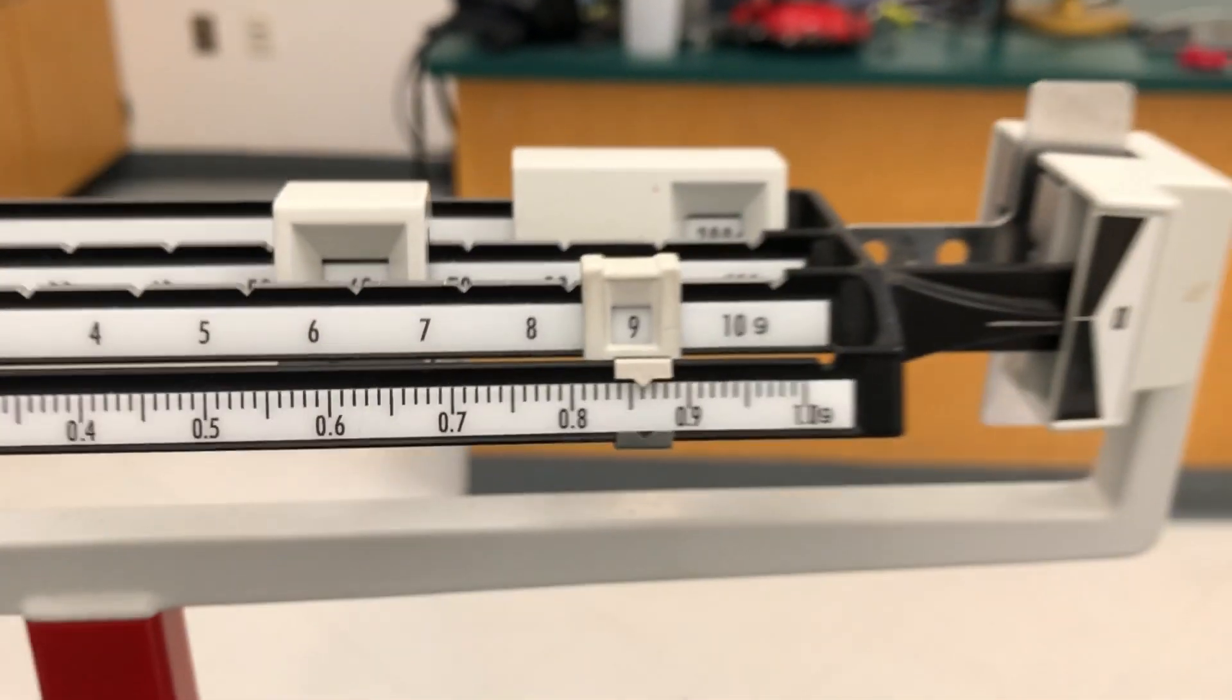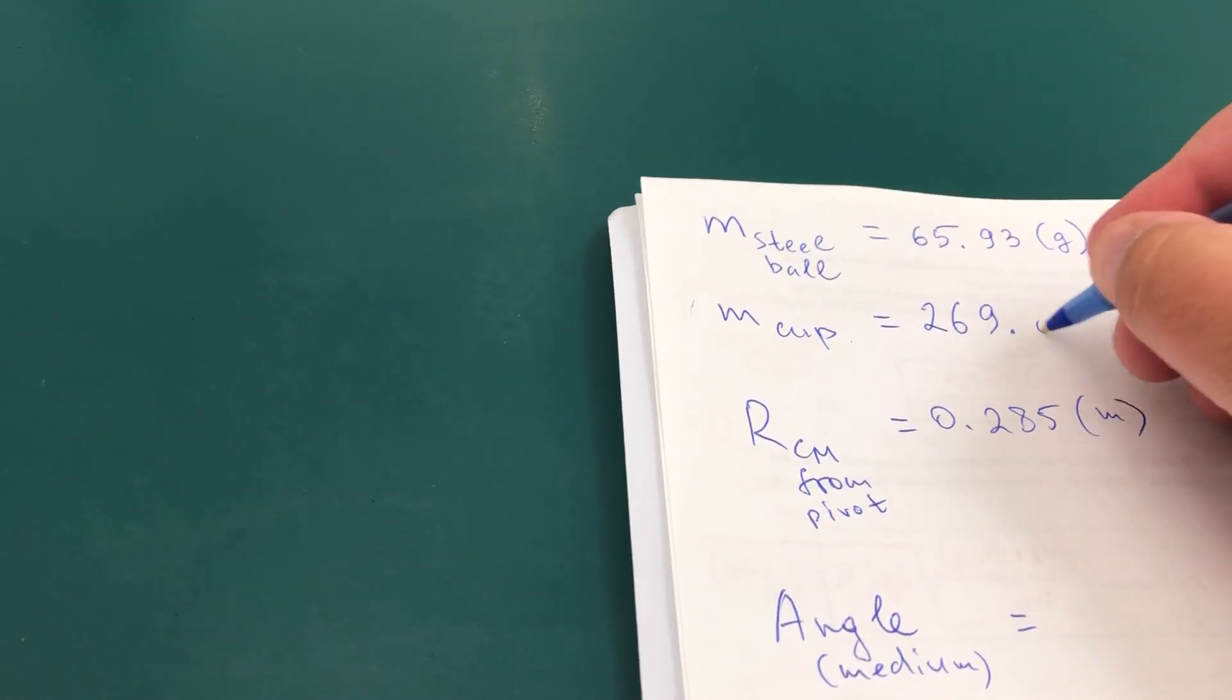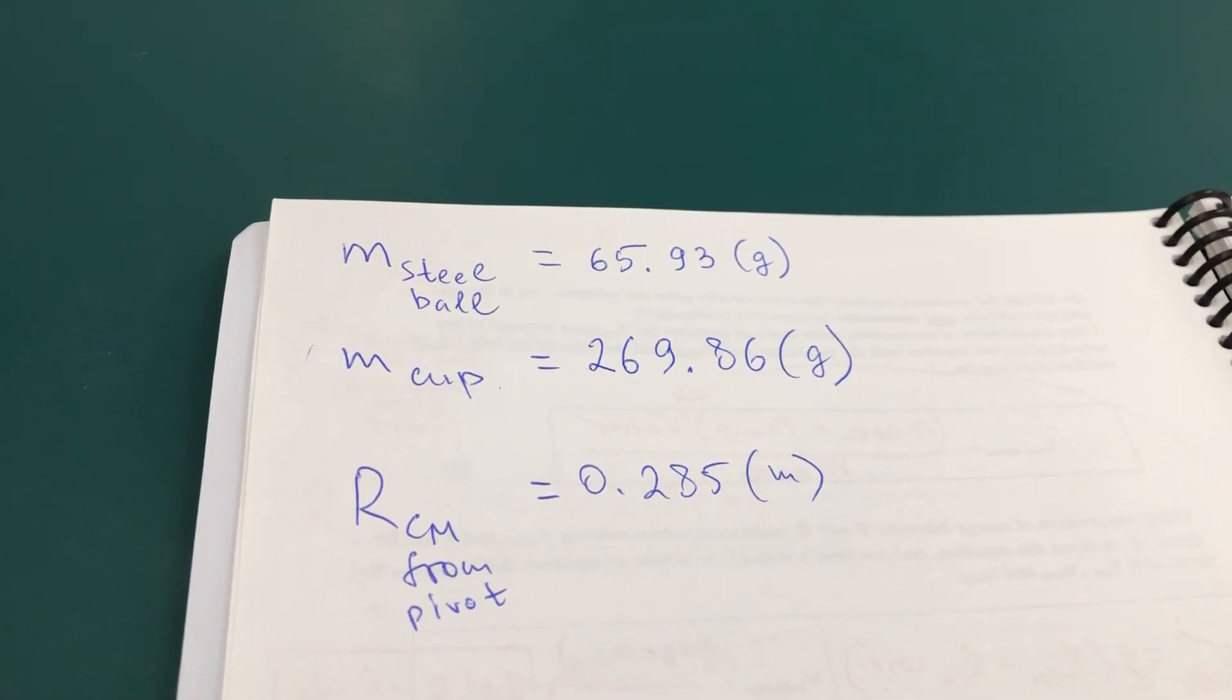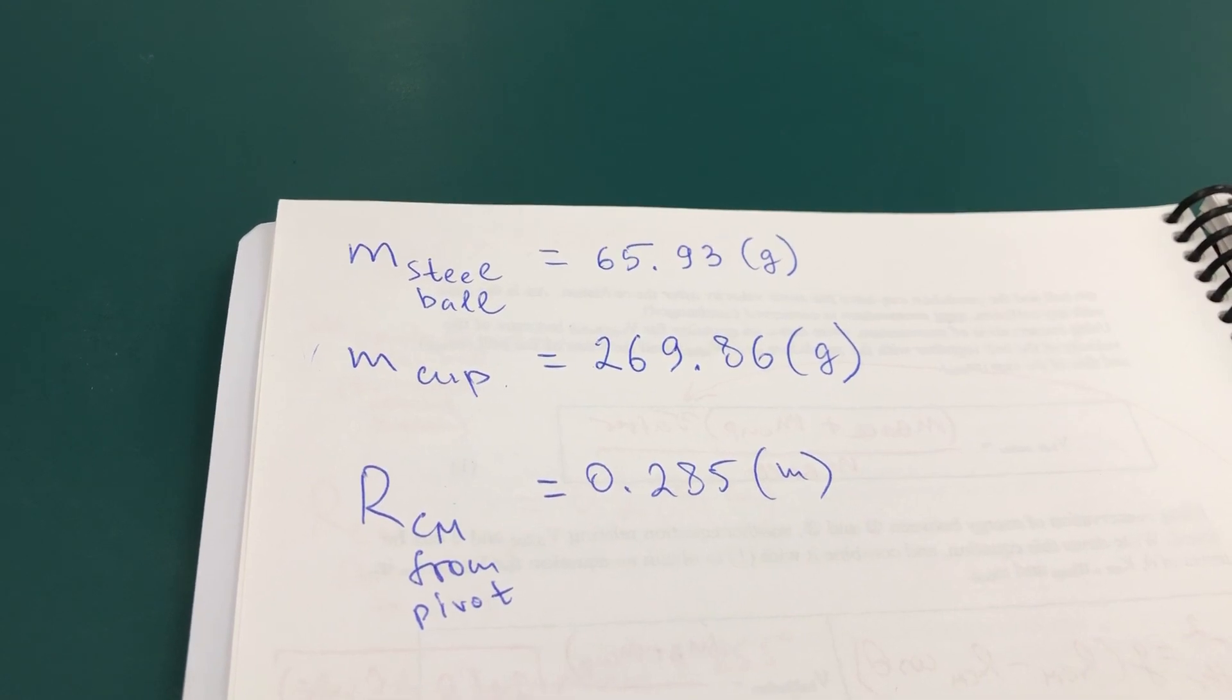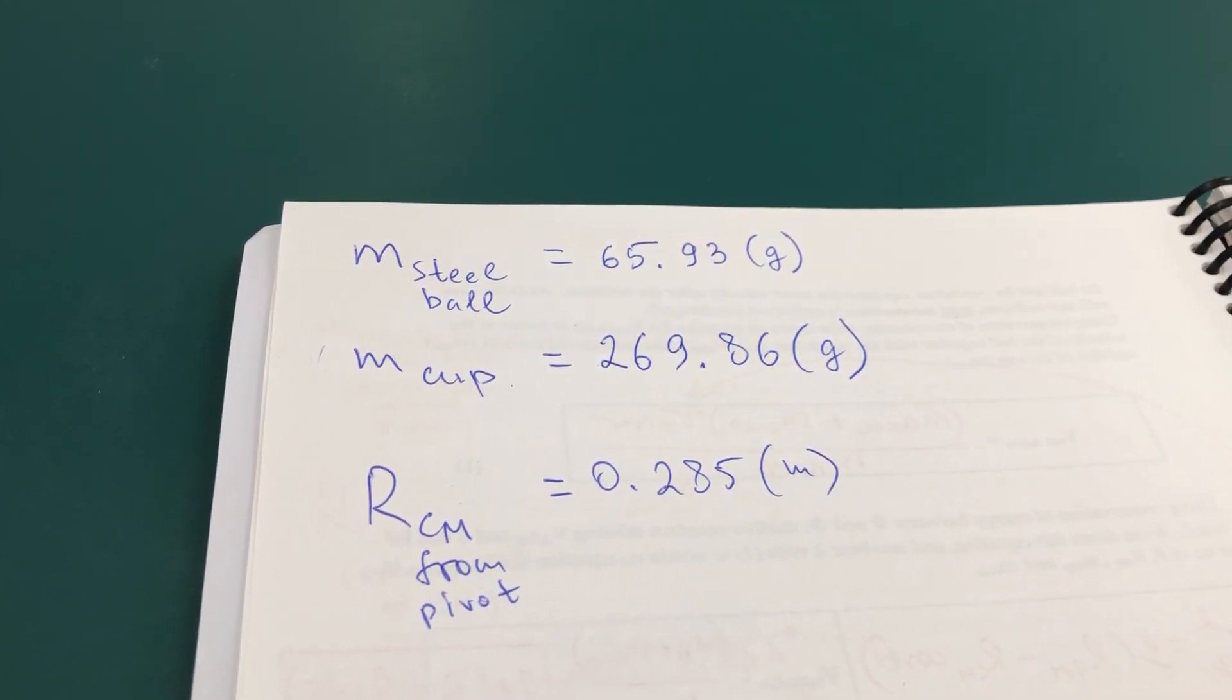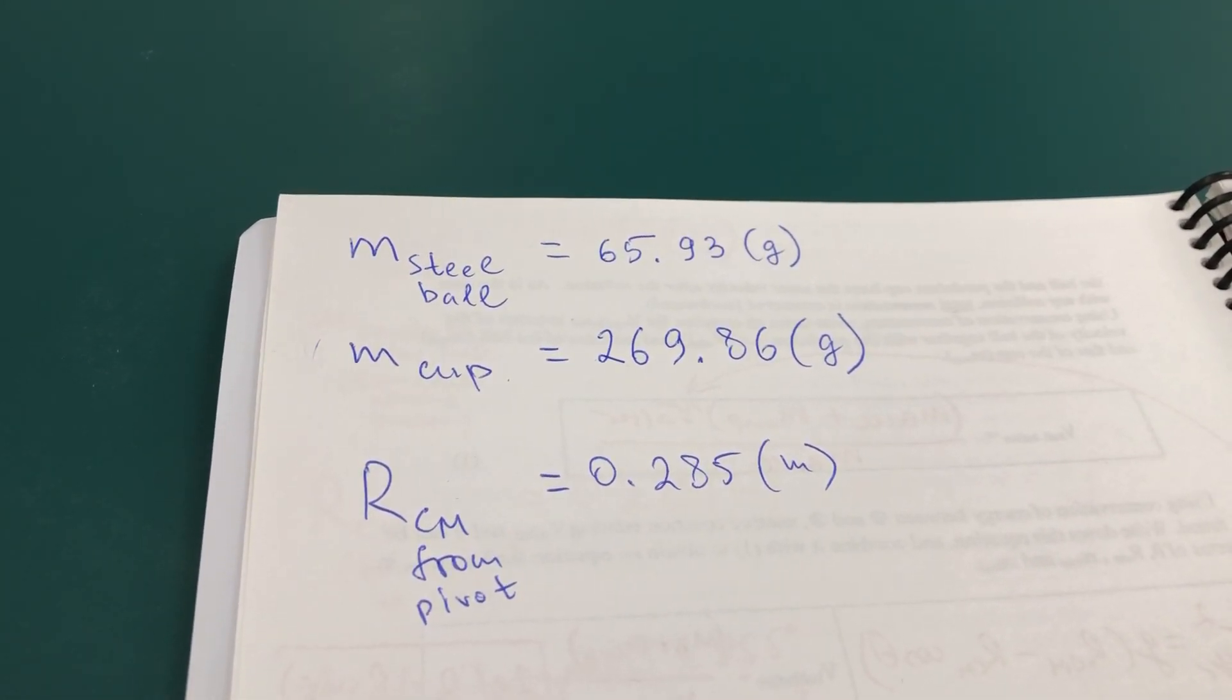So the geometry of the receiving cup, from the pivot, the distance from the pivot all the way to the center of mass, the point where the ball enters the cup, is 28 and a half centimeters, or 0.285 meters. So this will define the geometry of the setup.